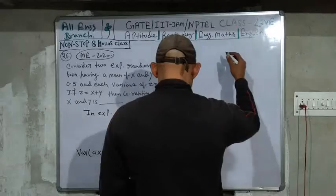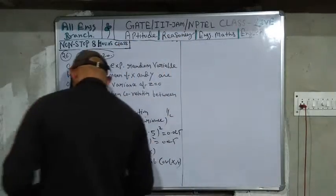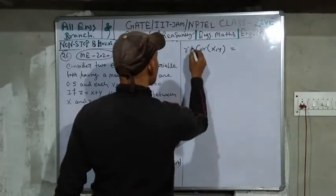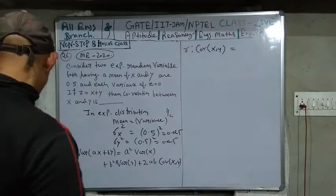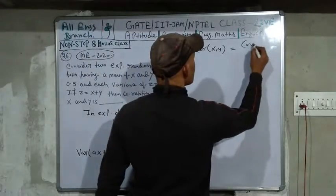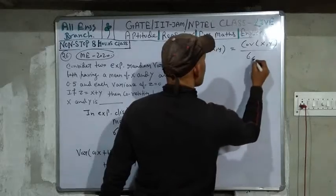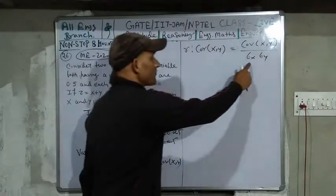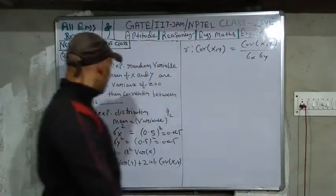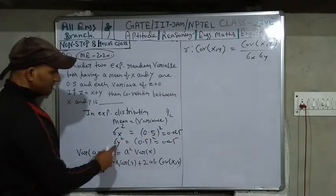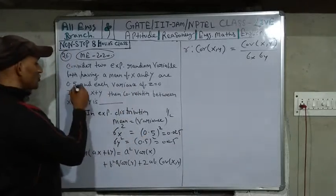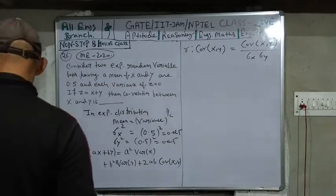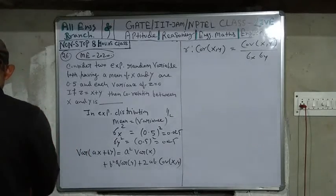The second formula is the correlation of X and Y, denoted r, equals covariance(X, Y) divided by sigma_x times sigma_y. First we need to find the covariance. We already know sigma_x and sigma_y, since sigma_x squared equals 0.025, which means sigma_x equals 0.5, and similarly sigma_y equals 0.5.